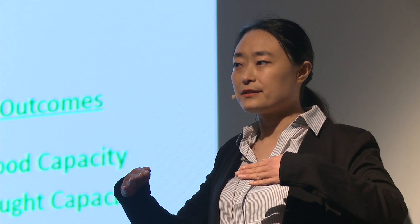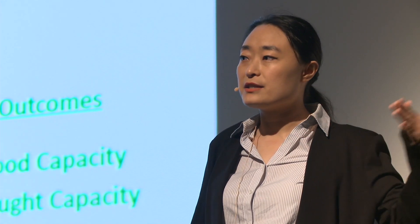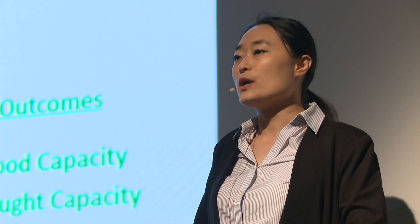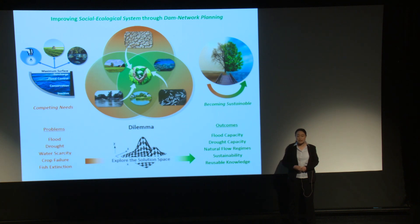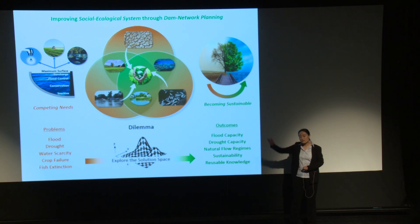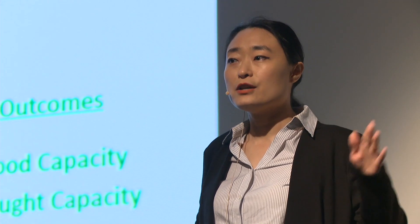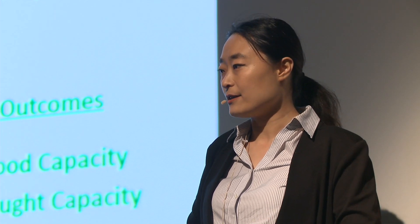What causes the discrepancies? The fluctuation in user demands and variation in precipitation do — they are uncertainties in this system. We have a dilemma here: we must manage these uncertainties, but we cannot predict them accurately all the time. Therefore, to improve our dams, we must make water flow plans robust to those uncertainties, which means the fluctuation and variation should not significantly increase the discrepancies which cause system failures.